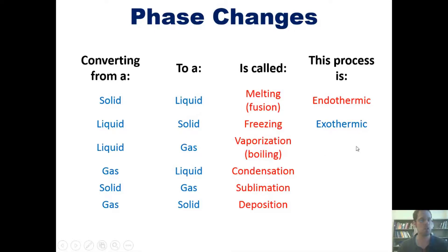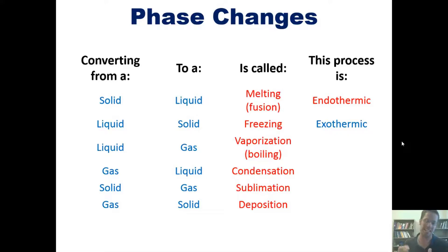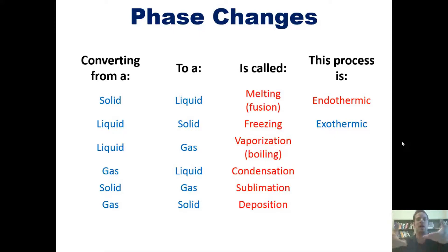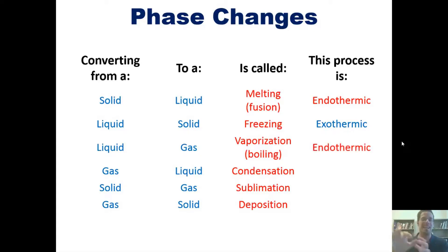Does converting a liquid into a gas consume heat or give off heat? If you've ever boiled a pot of water, that's a dead giveaway — to convert liquid water into gas, you have to put heat into it. It consumes heat; that heat is used to get individual molecules to wiggle apart enough to break their intermolecular forces and separate out. Therefore, converting from a liquid to a gas — evaporating or vaporizing — is endothermic.